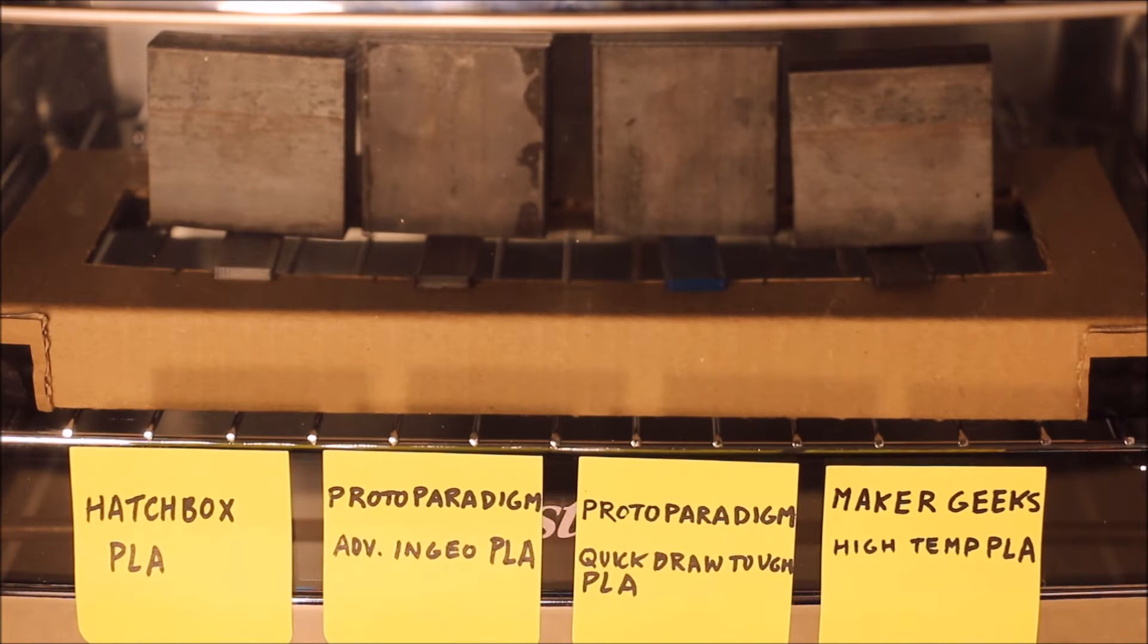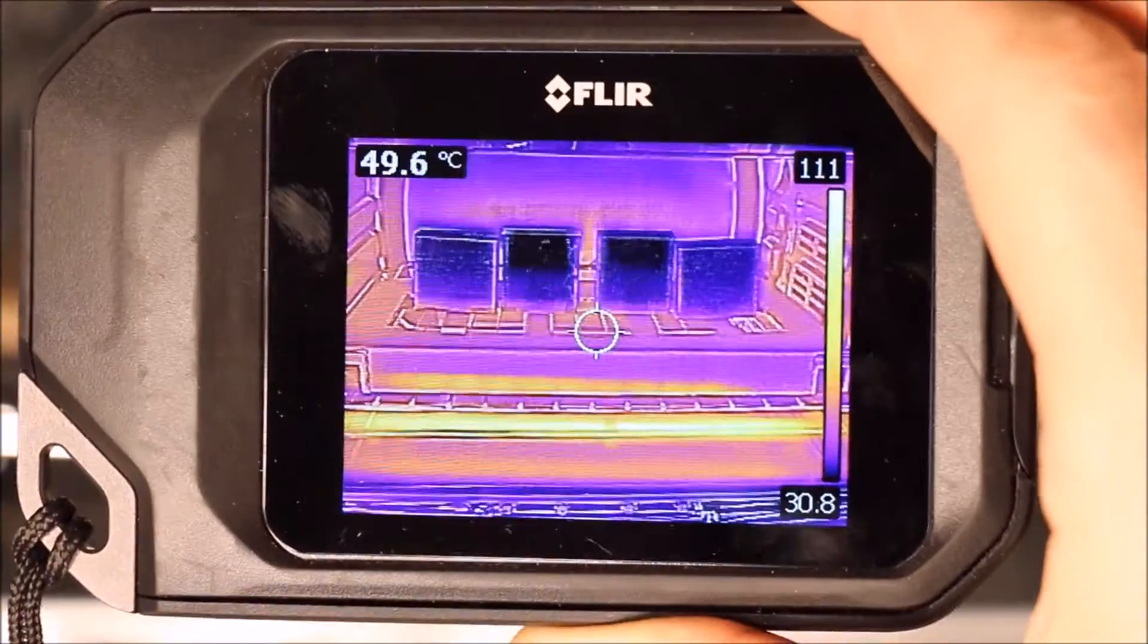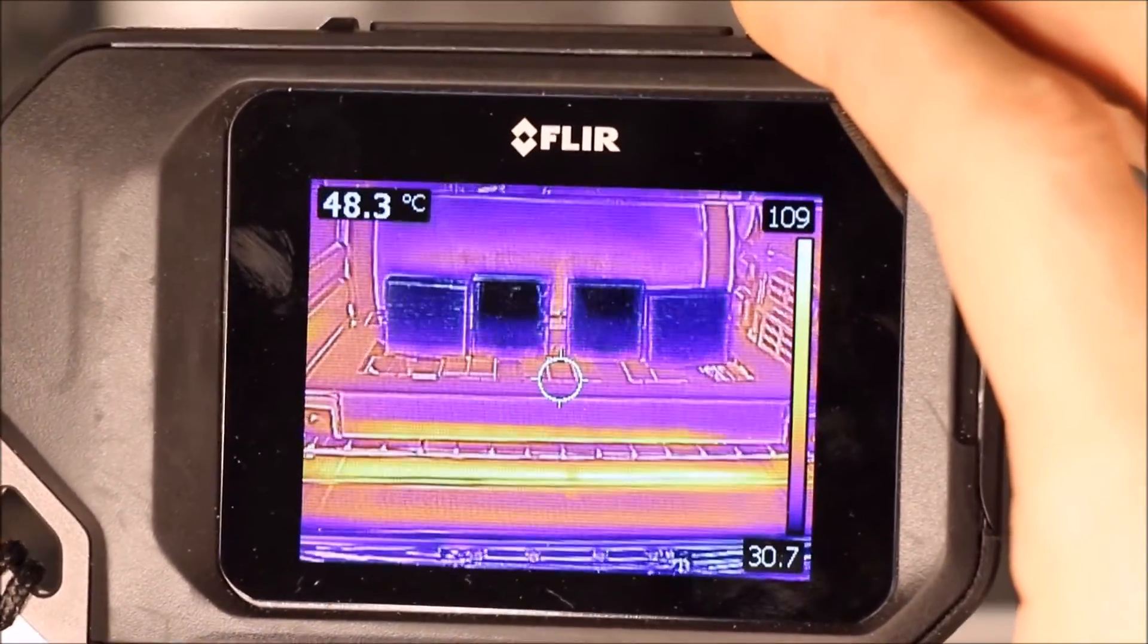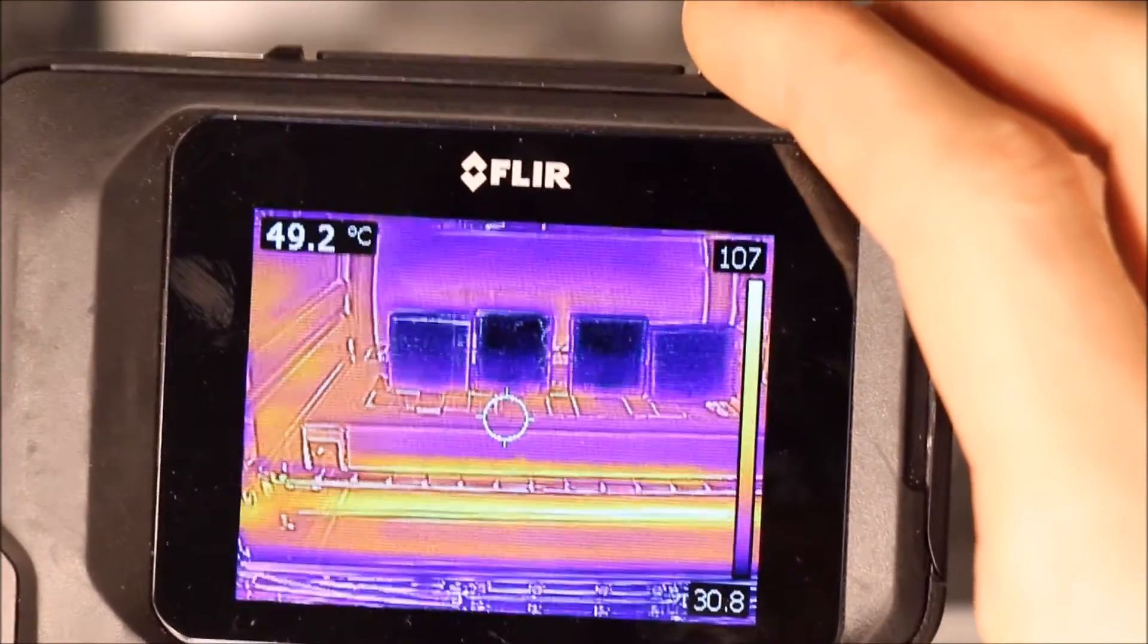So it appears that Maker Geeks High Temp PLA, which I was figuring would be the hardest contender here, is actually the first to begin to yield here. They are approximately 50 degrees C now.